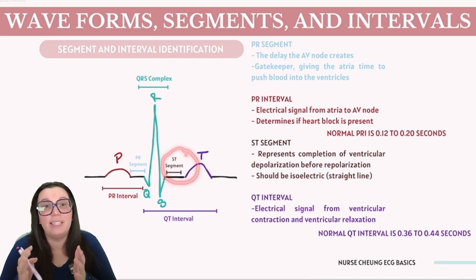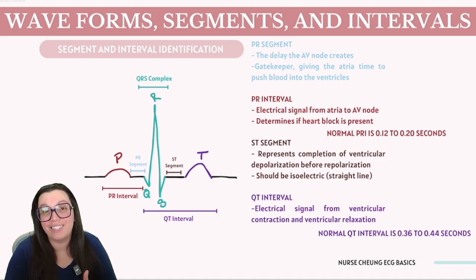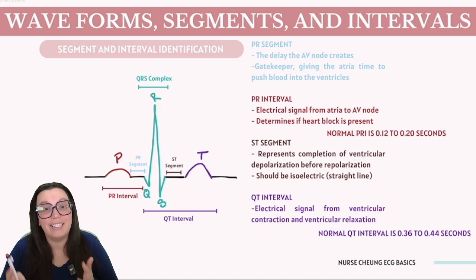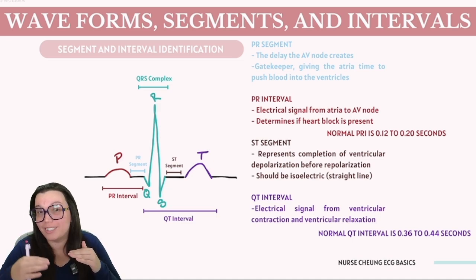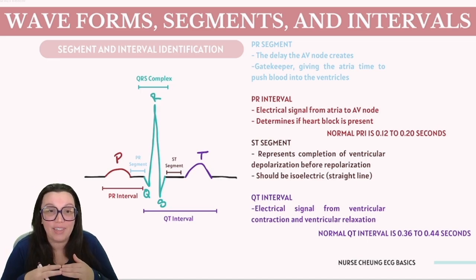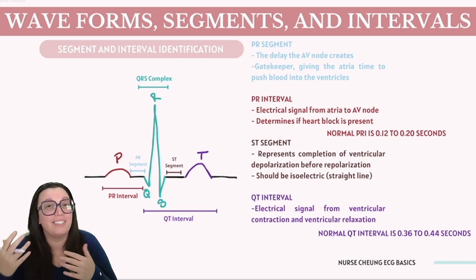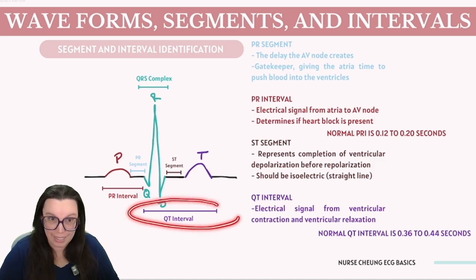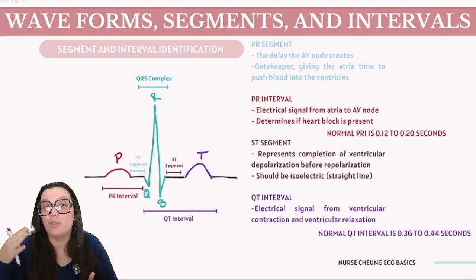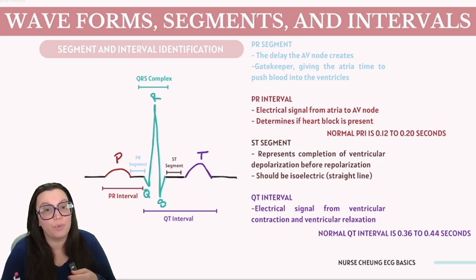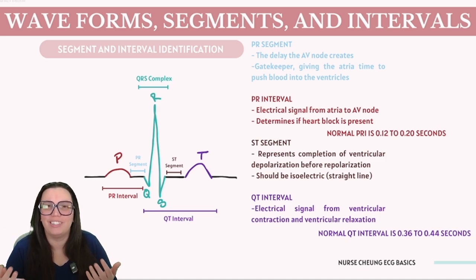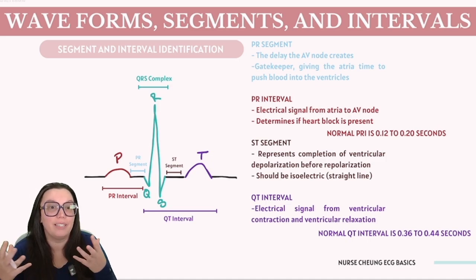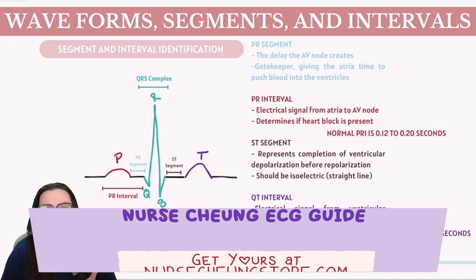We have the ST segment, which marks the end of ventricular depolarization and the onset of ventricular repolarization. It is expected to be flat, reflecting its isoelectric nature — a straight line without any upward or downward deviations. Evaluating the ST segment is crucial because deviations from that expected flat line can indicate cardiac conditions like ischemia or myocardial infarctions. The QT interval spans from the onset of the QRS complex to the end of the T wave, representing the duration required for the ventricles to both contract and subsequently relax in response to electrical signals.